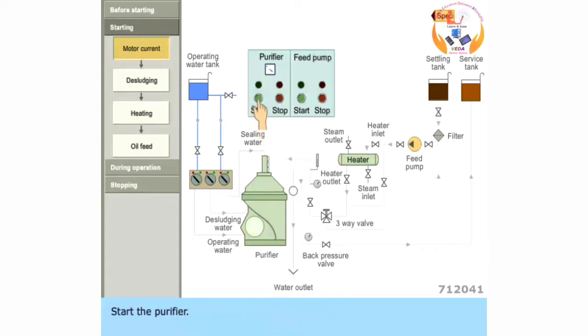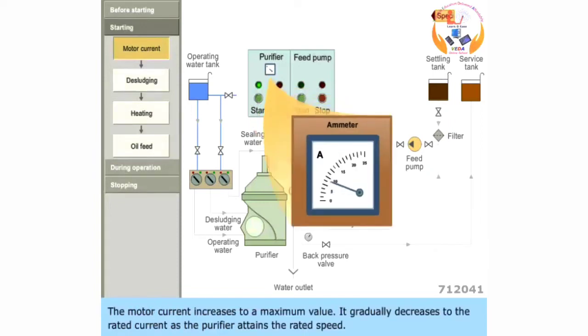Start the purifier. The motor current increases to a maximum value. It gradually decreases to the rated current as the purifier attains the rated speed.